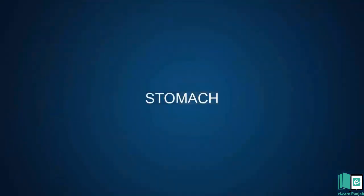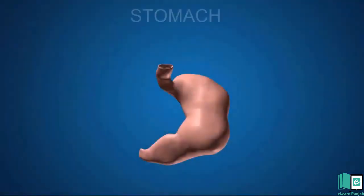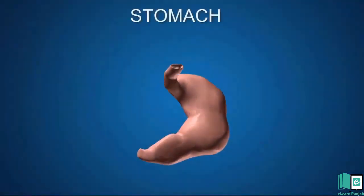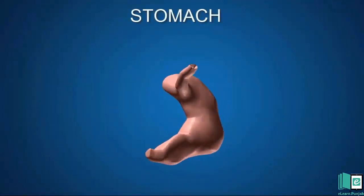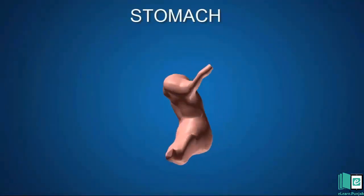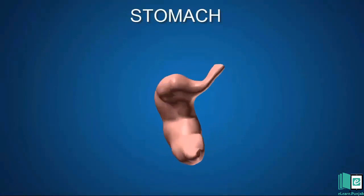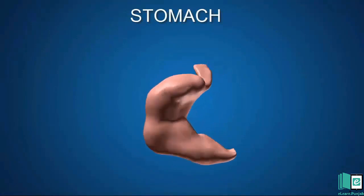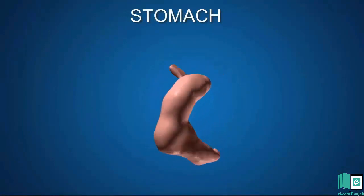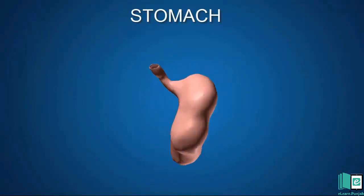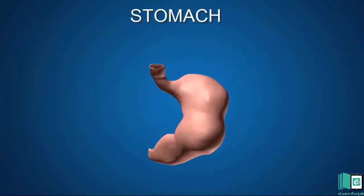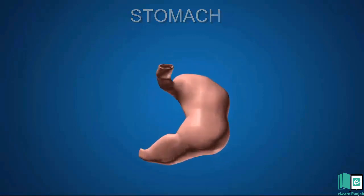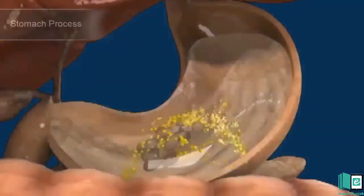Stomach. Our stomach is a large J-shaped muscular bag. It mixes the food with digestive juice. The digestive juice begins the digestion of proteins — meat, egg, milk, pulses, etc.